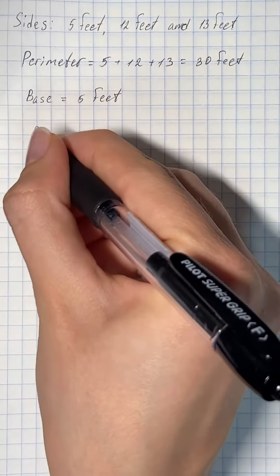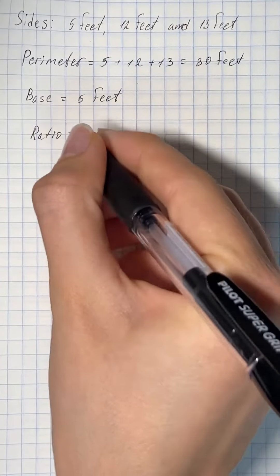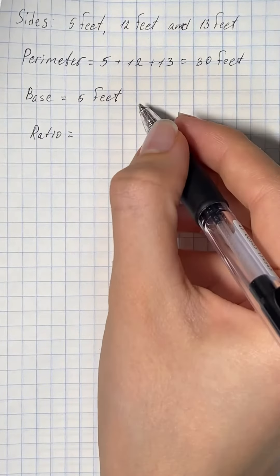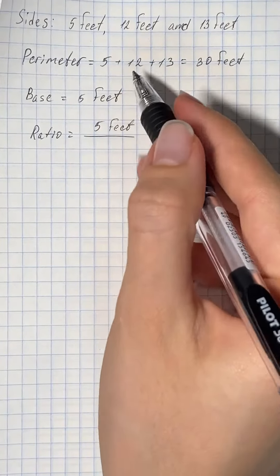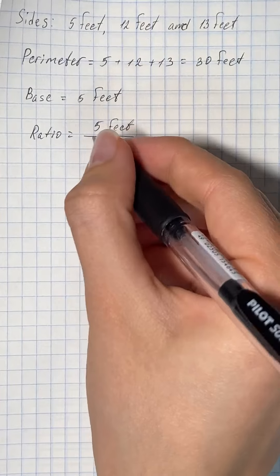So now in our ratio, the first number will be the base of triangular mainsail and the second number will be the perimeter of triangular mainsail.